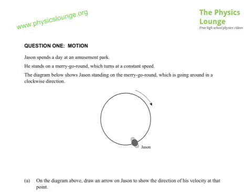Jason spends a day at an amusement park. He stands on a merry-go-round which turns at a constant speed. The diagram below shows Jason standing on the merry-go-round, which is going around in a clockwise direction. There's an arrow which shows that.